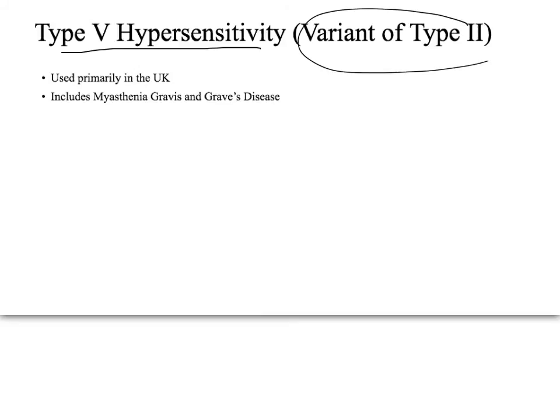In the United Kingdom, there is a type 5 hypersensitivity, but it is not really used in the US — it's just a variant of type 2. Myasthenia gravis and Graves disease would be called type 2 in the US, but type 5 in the UK.